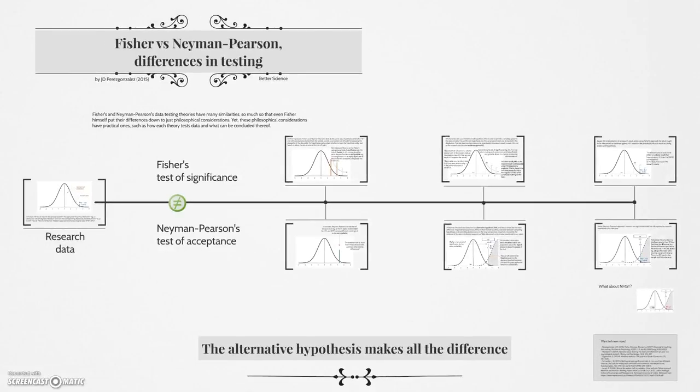So, the main message to gain from here is that the alternative hypothesis makes all the difference between those two approaches, between Fisher's and Neiman-Pearson's test.